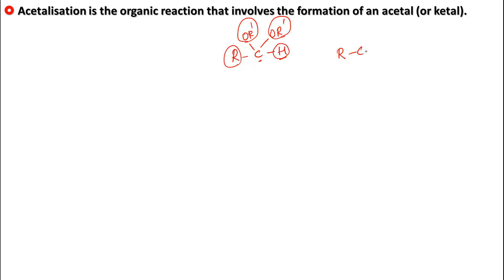If on the carbon there is no H — that means both R and R' could be alkyl groups or aryl groups — then we call this entire thing a ketyl.